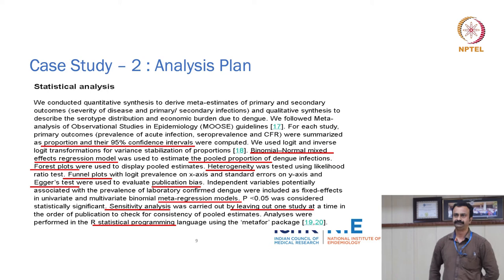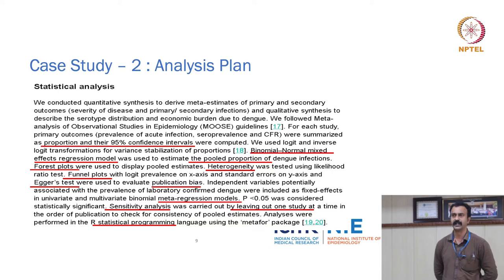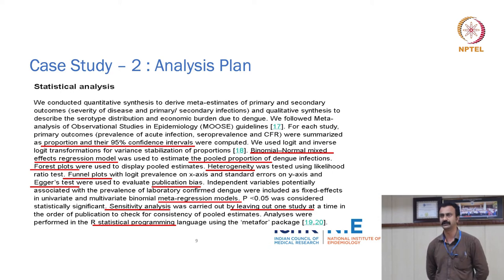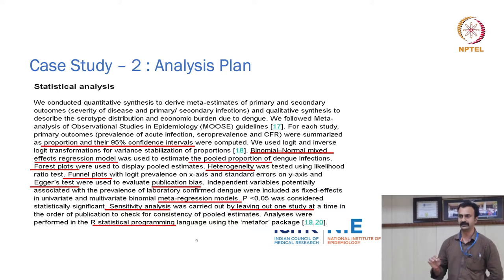For case study two, the analysis plan states: we conducted quantitative synthesis to derive meta-estimates of primary and secondary outcomes. For each study, the primary outcomes were summarized as proportions with 95% confidence intervals. We used logit and inverse logit transformations for variance stabilization. A mixed regression effects model was used to estimate the pooled proportion of dengue infections. Forest plots were used to display pooled estimates. Heterogeneity was tested, funnel plots were used, and Egger's test was used to evaluate publication bias. Independent variables potentially associated with prevalence were evaluated using meta-regression models, along with sensitivity analysis and R statistical program.